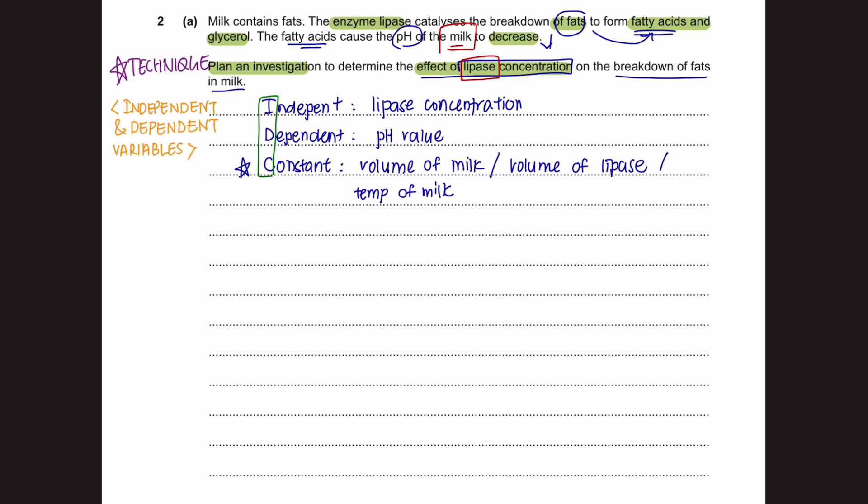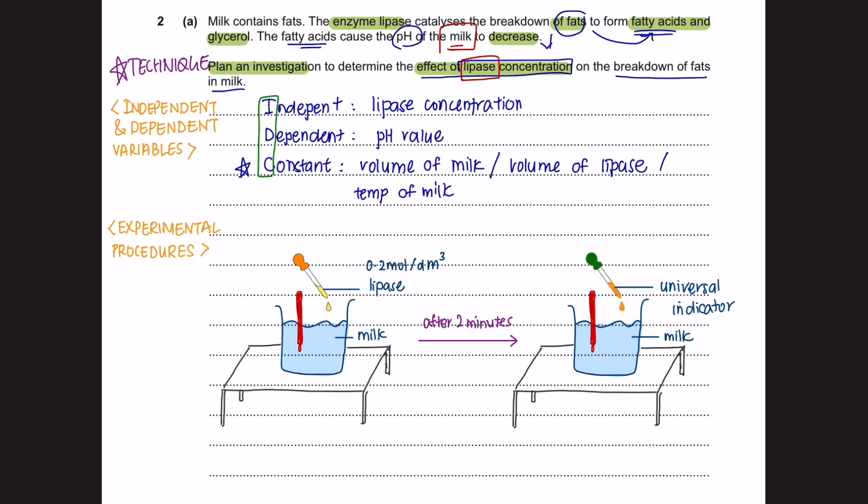Now, after identifying your variables, we are going to move on to the experimental procedures. The idea here is that you need to understand what has to go on in your experiment. Since we are looking to measure the pH value of the breakdown of fat in milk, we shall first prepare a beaker of milk. And we are performing this experiment at different concentrations of lipase. So we are going to add lipase into the milk to break down the fat in the milk. And once it has formed fatty acid, we are going to use a universal indicator to observe the color change to measure its pH value.